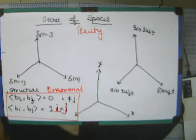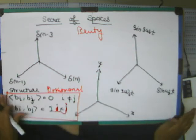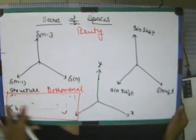Just see how I am going to do. Just see, this delta of n minus 1, delta of n, they are orthonormal.